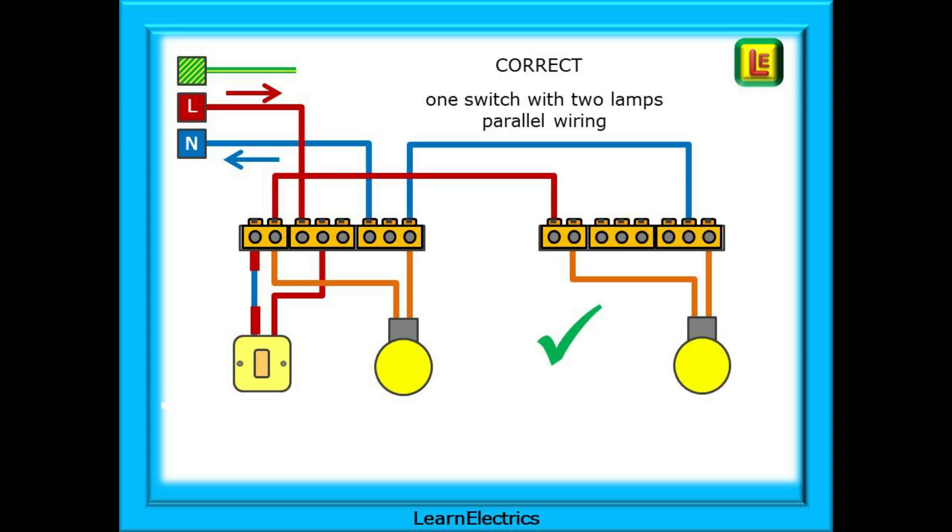Now we can add a second lamp in parallel with the first. When lamp one comes on, so does lamp two. This has been achieved by connecting together the switch blocks in the two ceiling roses, and then connecting together the neutral blocks in each ceiling rose. Attach your second lamp between them, and all is good.